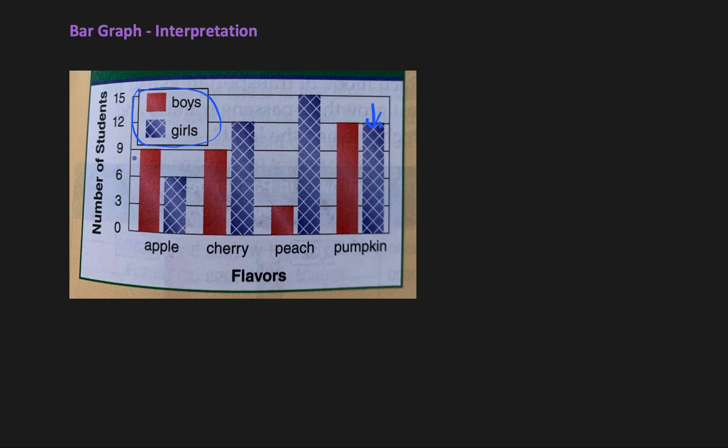With that, let's look at this given example where on the x-axis we have different flavors, which are flavors of different pies: apple, cherry, peach, and pumpkin. On the y-axis, we have number of students who said what type of pie they like the most.